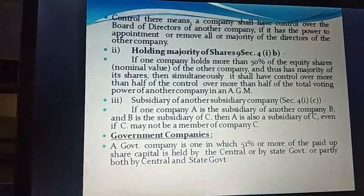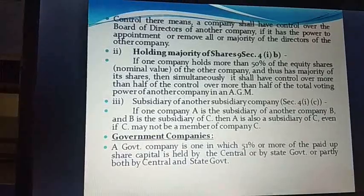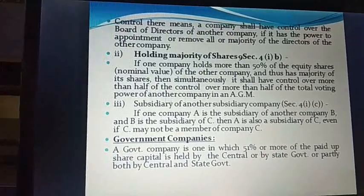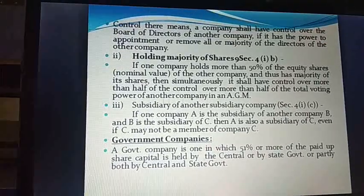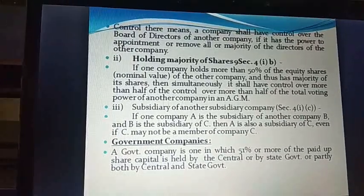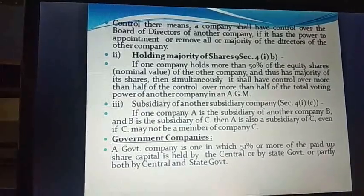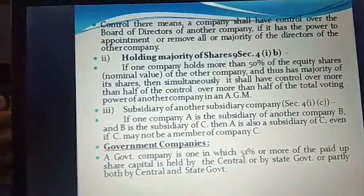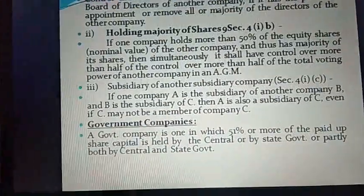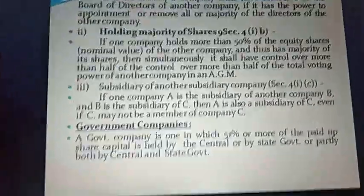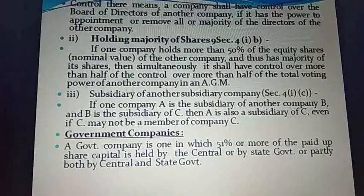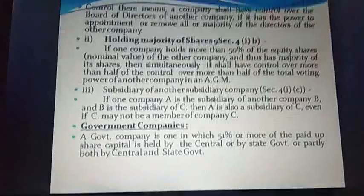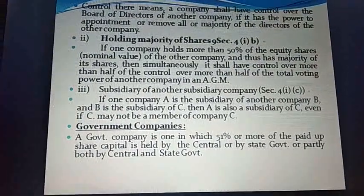In companies, whatever decision making is done, it is done democratically. So if we hold more than 50% of shares of another company, and there is a voting on any important matter, we will win that proposal because we have more than 50% of the equity shares. This is how one company has control over another.